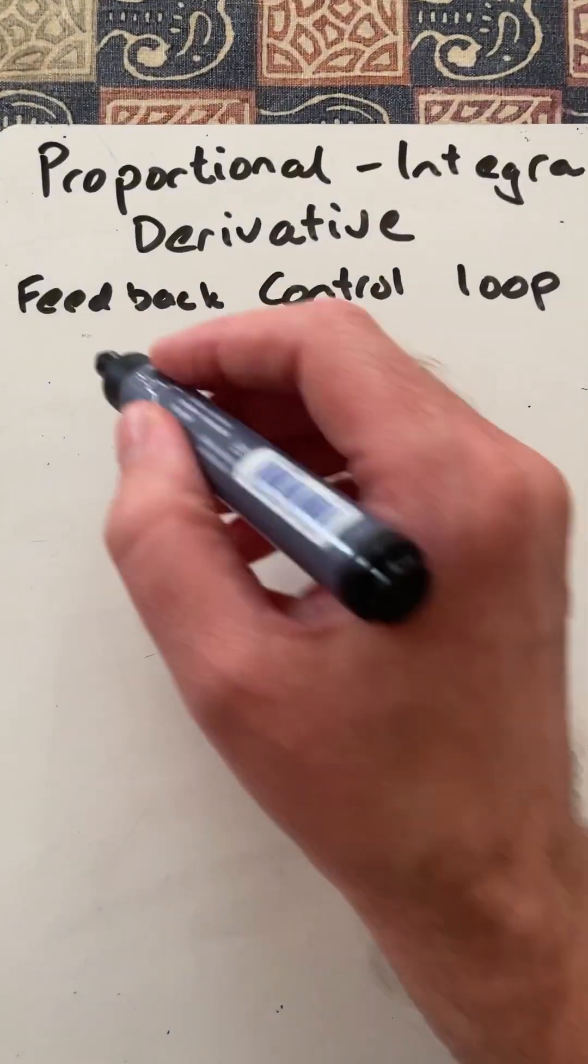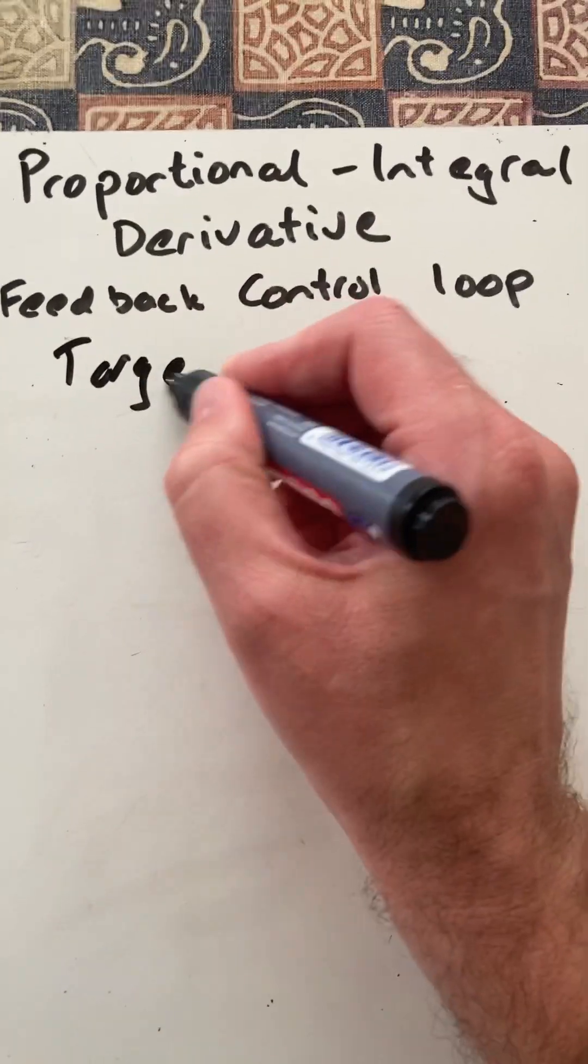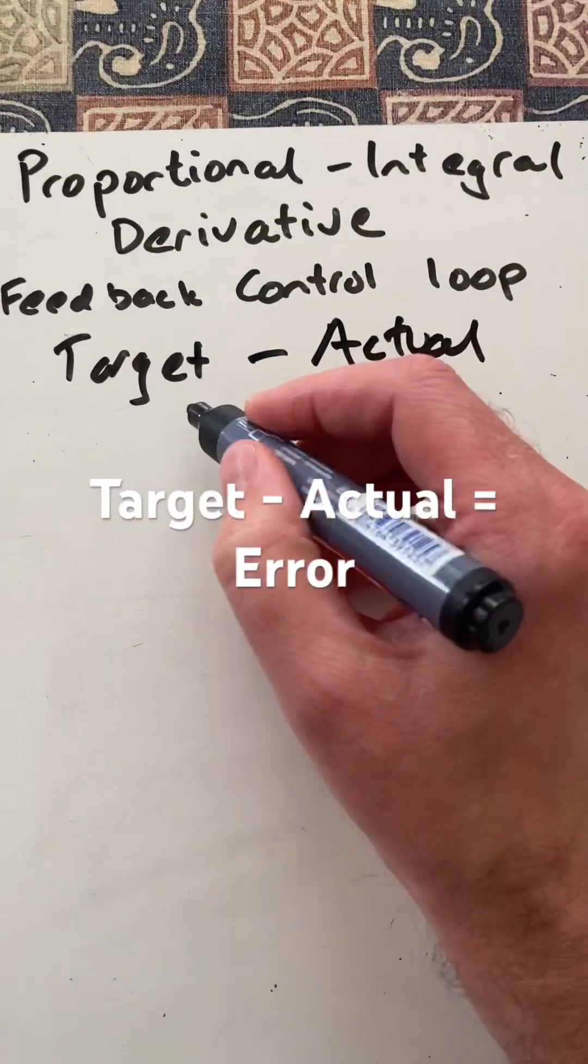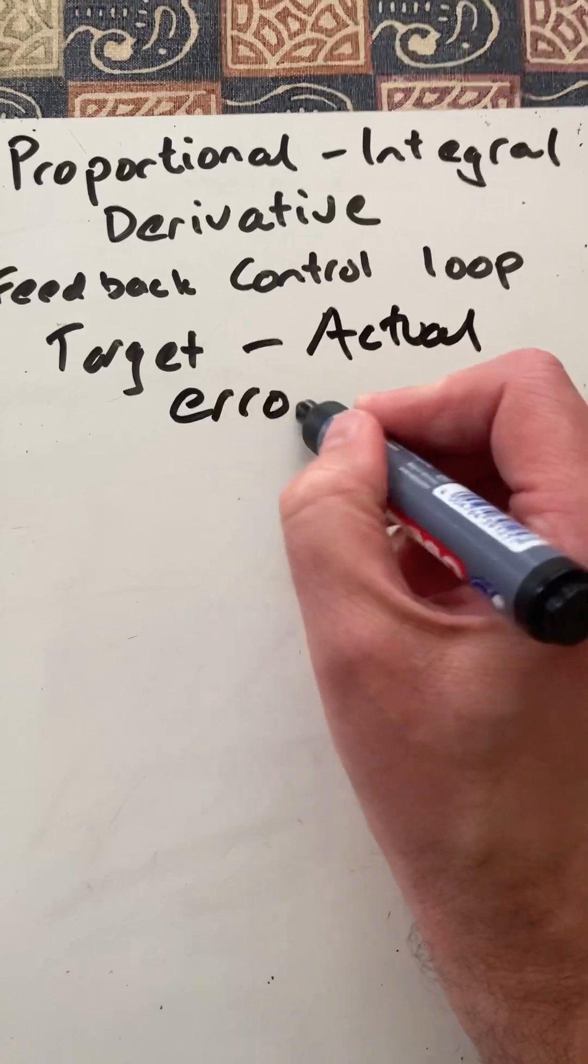In this case, there will be a target value that the system wants to aim for, and there'll be the actual value where the system is, and the difference between those two will be the error.